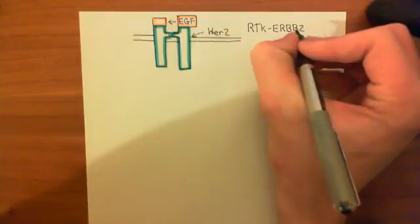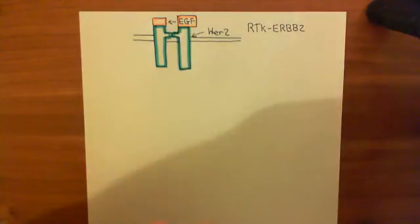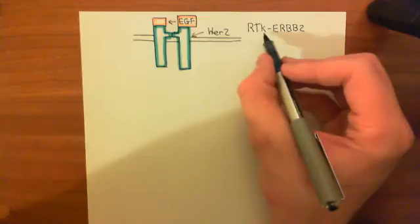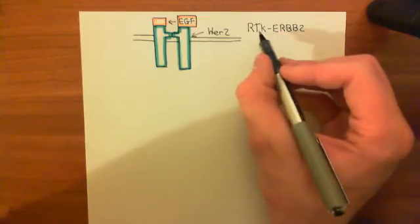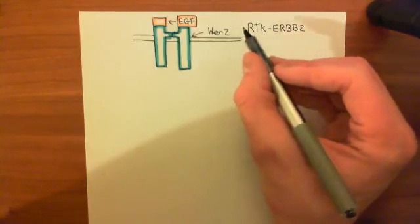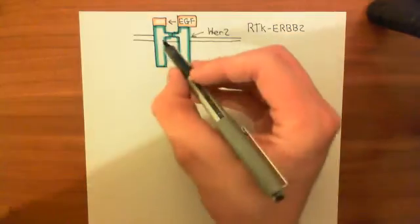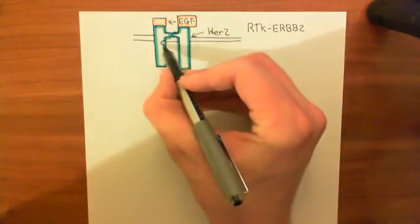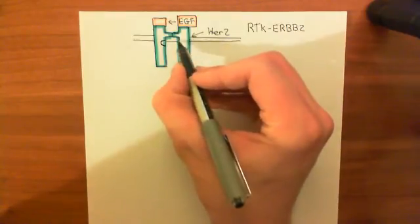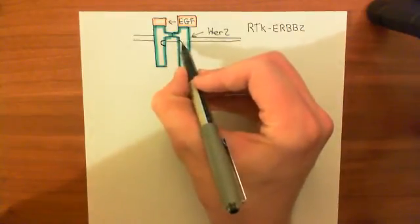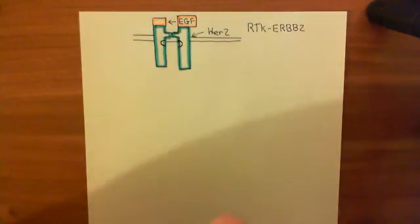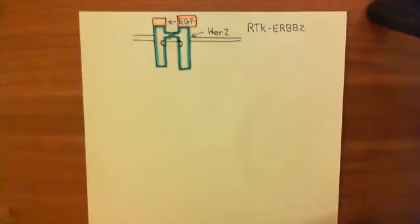The reason it's called a receptor tyrosine kinase is because these HER2 receptors have, in their structure, a tyrosine kinase domain — a domain that is capable of catalyzing the phosphorylation of tyrosine residues.